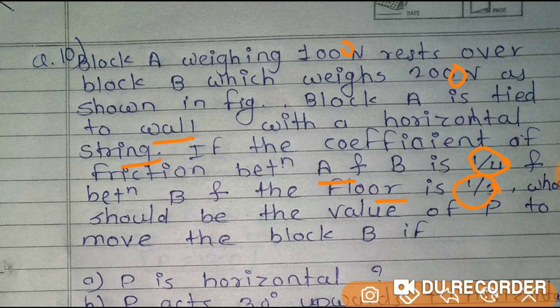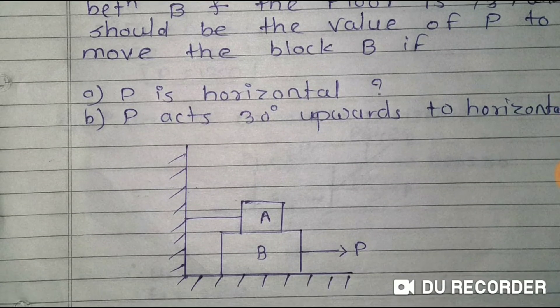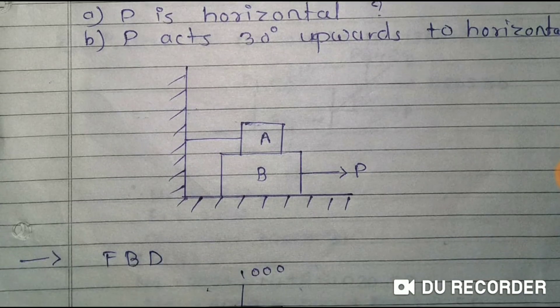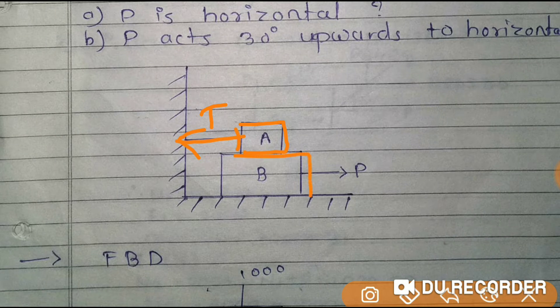What should be the value of P force when it moves block B? If P force is horizontal and P is at 30 degree angle. So first of all, we have the question here. We have block A tied to the wall, and below it is block B.